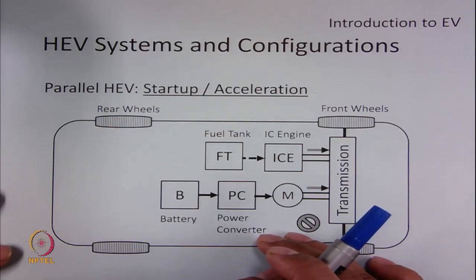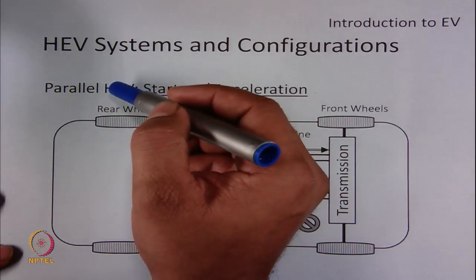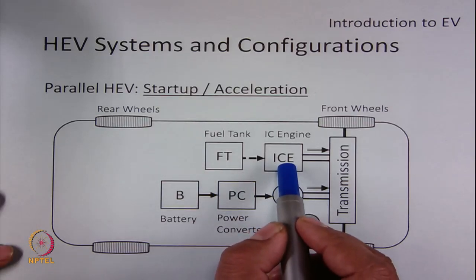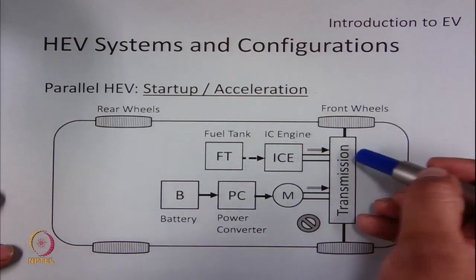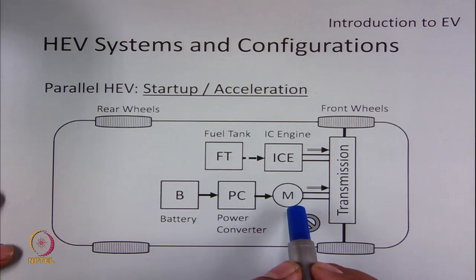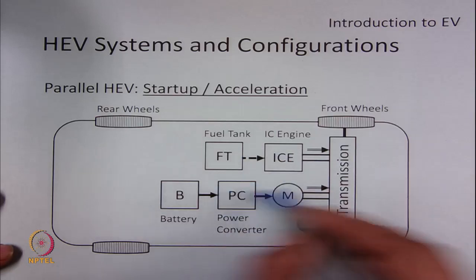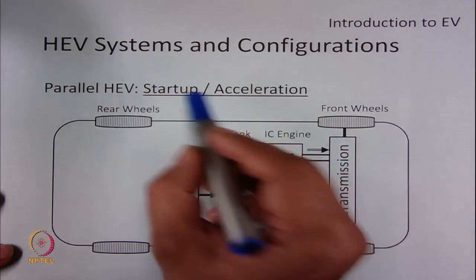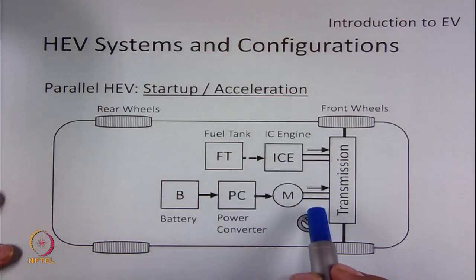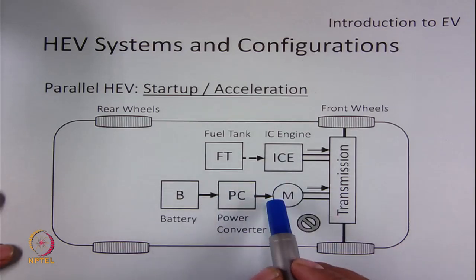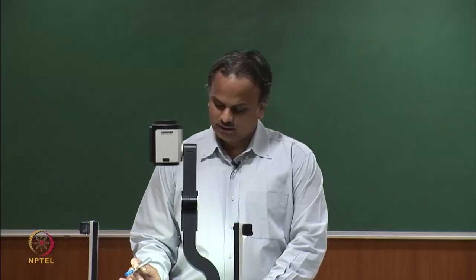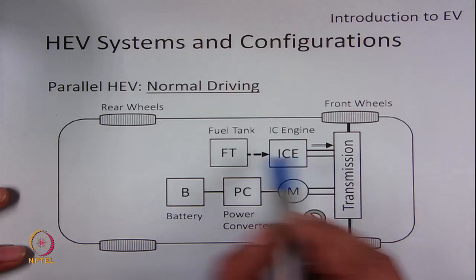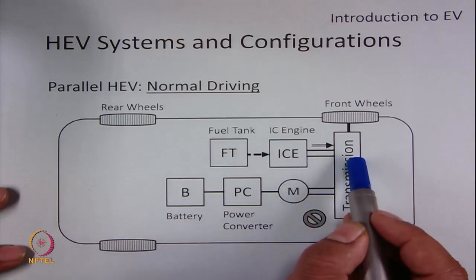Those were the different modes of operation of a series HEV. Now let us discuss the operation modes of a parallel HEV. In a parallel HEV, the mechanical system based on the IC engine is also connected to the transmission, in addition to the electrical motor-based battery-driven system. Both drive trains are connected individually to the transmission using different clutches. During startup or acceleration, both systems are on and maximum power can be transferred. During normal driving mode, only the IC engine-based drive train is active and mechanical energy is transferred from the IC engine to the transmission.